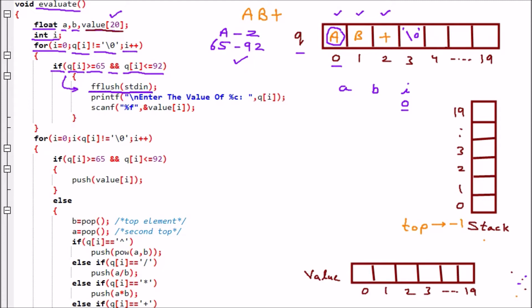When an alphabet is found, fflush(stdin) clears the buffer. Then printf asks 'Enter the value of %c' — for q[0] that is A — so the message is 'Enter the value of A.' The user enters 4. Then scanf reads it into value[i], so value[0] = 4, corresponding to A.